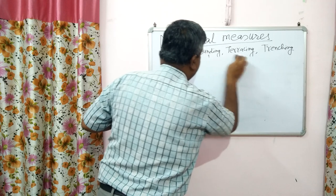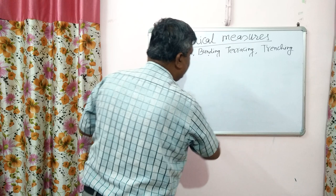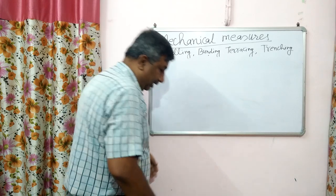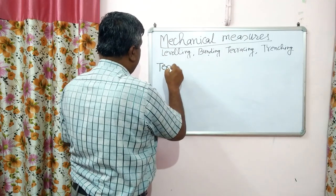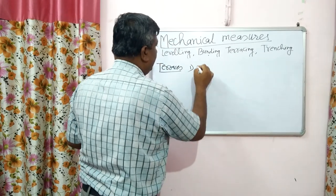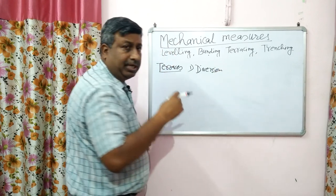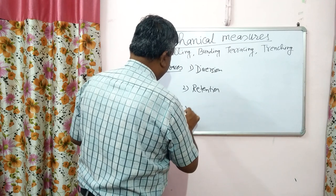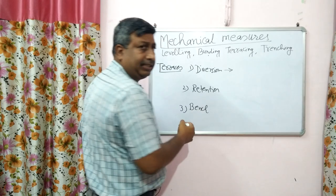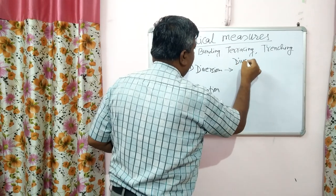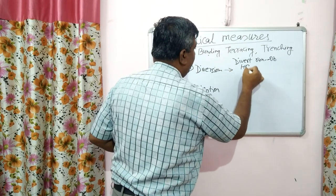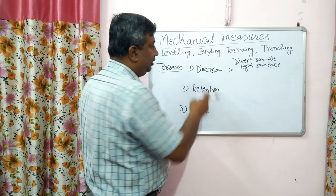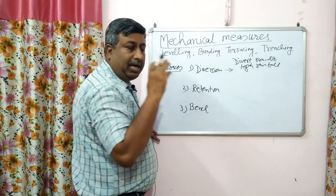The next mechanical measure is the terrace. A terrace is an earth embankment or ridge across the slope. There are three major types of terraces: diversion terrace, retention terrace, and bench terrace. In diversion terrace, the objective is to divert the runoff. In high rainfall areas, runoff quantity is high, so we safely divert the runoff to a suitable outlet — this is for conveyance of excess runoff to a suitable outlet.